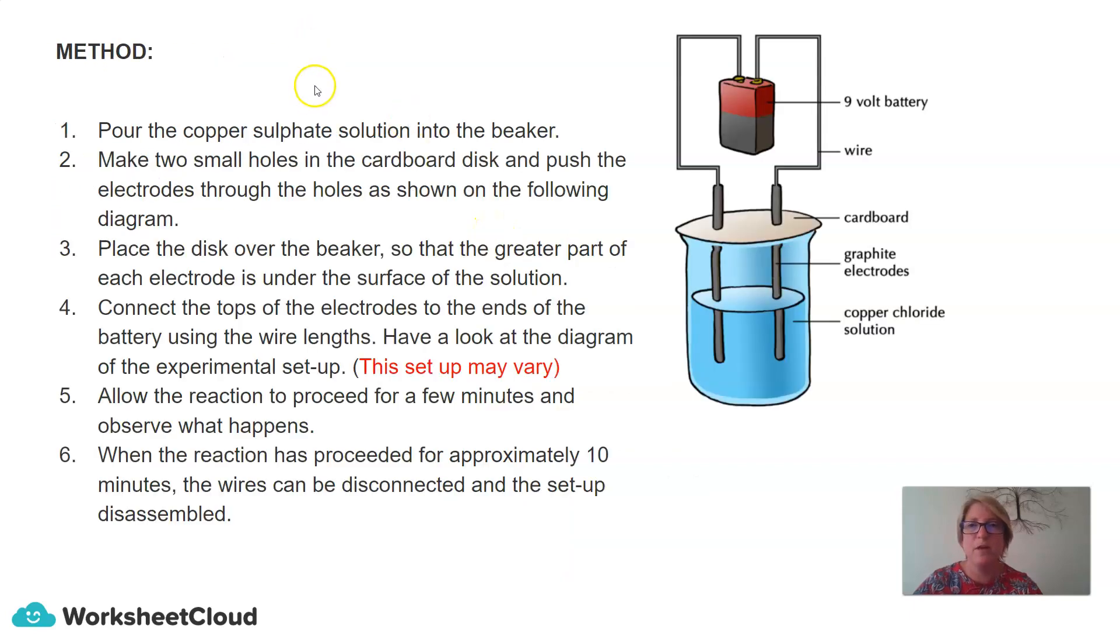So the method that can be followed is you pour the copper sulfate solution into the beaker. Here is our beaker and here is our copper sulfate solution. Here is our cardboard. You need to make two small holes in the cardboard that you can push the graphite electrodes into.